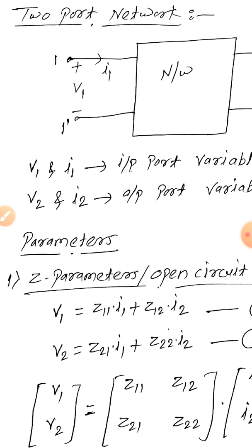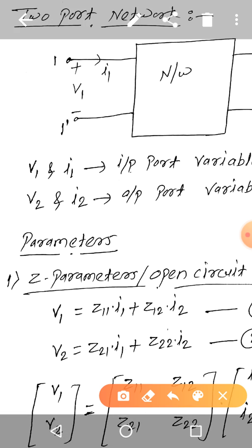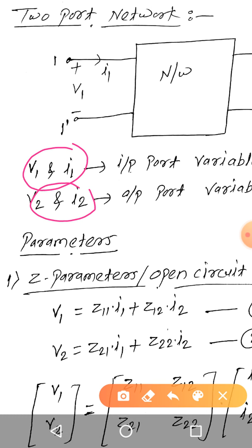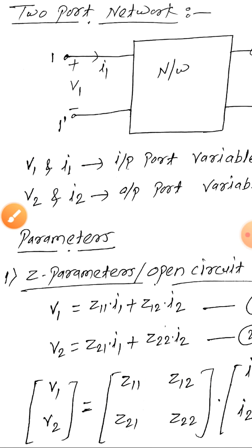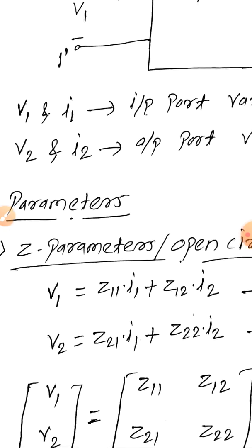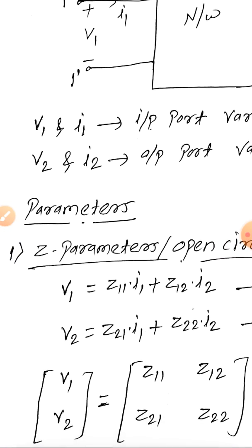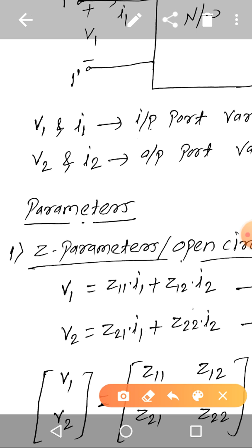Generally, these port variables — V1, I1, V2, I2 — give us a total of four port variables. Any two variables can be represented in the form of the other two variables. So depending on that, we have four different parameters in a two port network: the Z parameter, Y parameter, ABCD parameter, and H parameter.